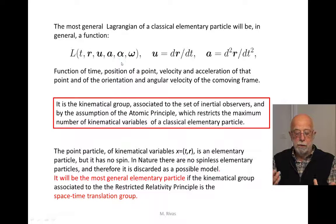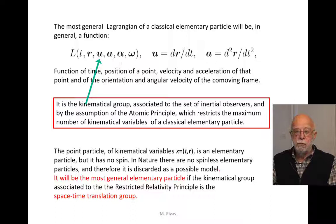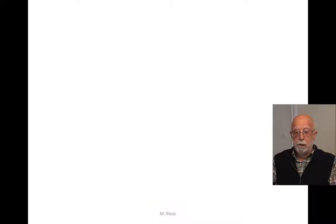The law of inertia also allows us to describe relative velocities among inertial observers, which adds three new kinematical variables to our possible kinematical space, and therefore our most general Lagrangian will have this form.